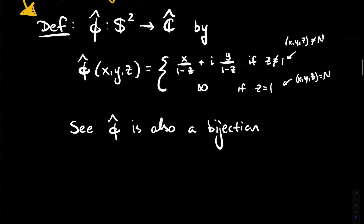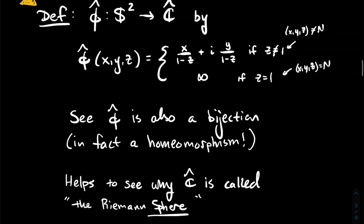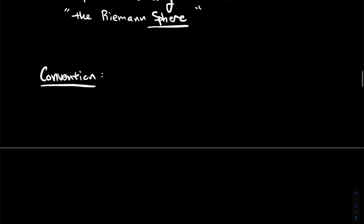So φ̂ is a bijection — it's already a bijection when excluding the north pole, and the north pole goes to infinity, so it's still a one-to-one correspondence. It's continuous with a continuous inverse, so it's a homeomorphism. Therefore the sphere is homeomorphic to the extended complex plane, which is why some people call the extended complex plane the Riemann sphere.